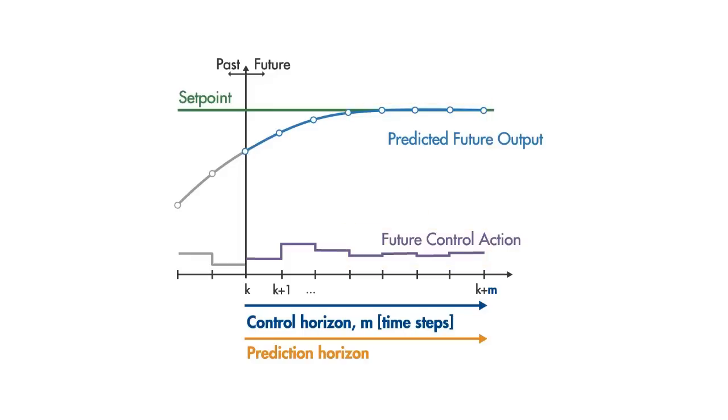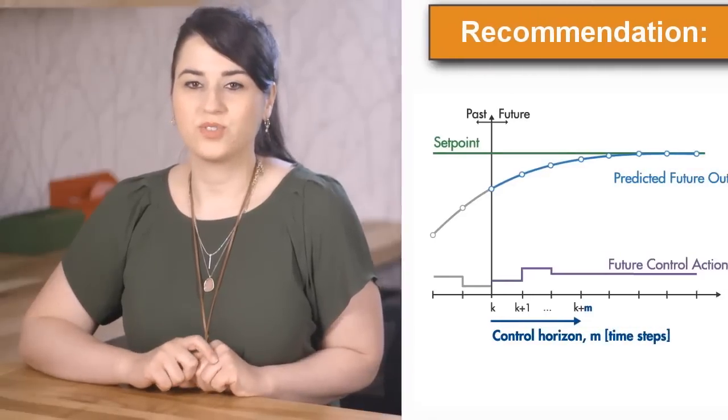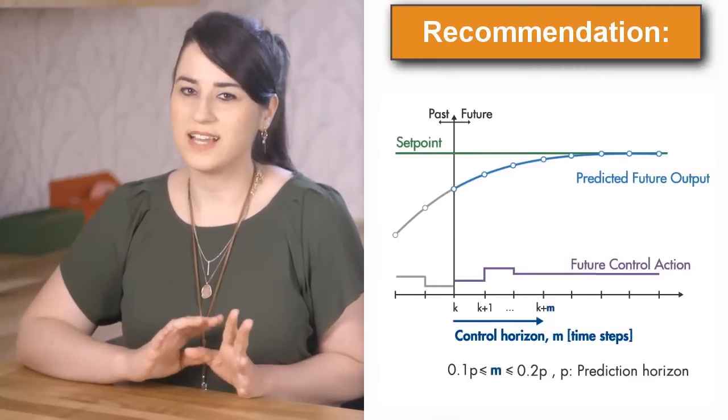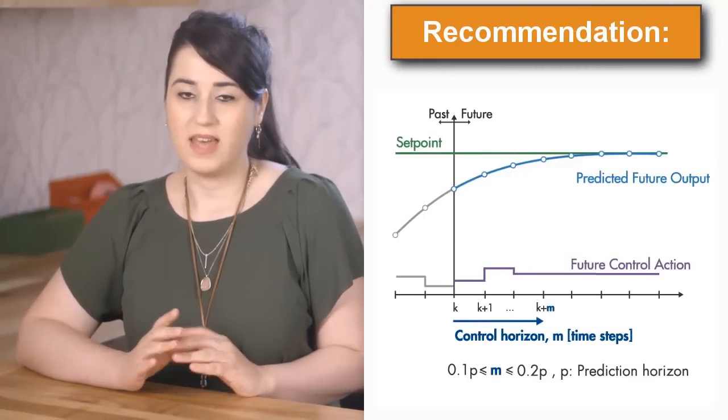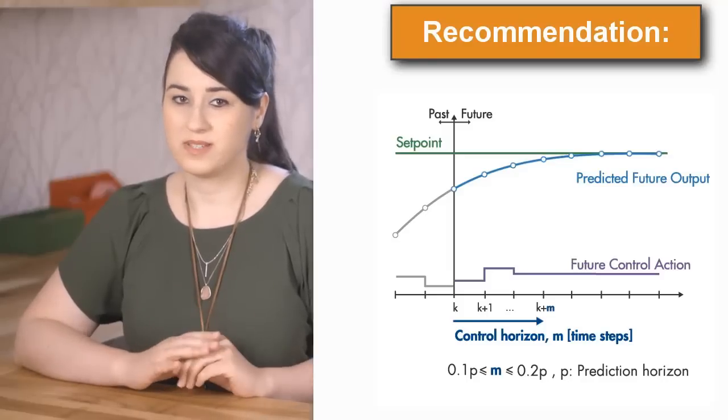Therefore, choosing a really large control horizon only increases computational complexity. A good rule of thumb for choosing the control horizon is setting it to 10 to 20% of the prediction horizon and having minimum 2 to 3 steps.